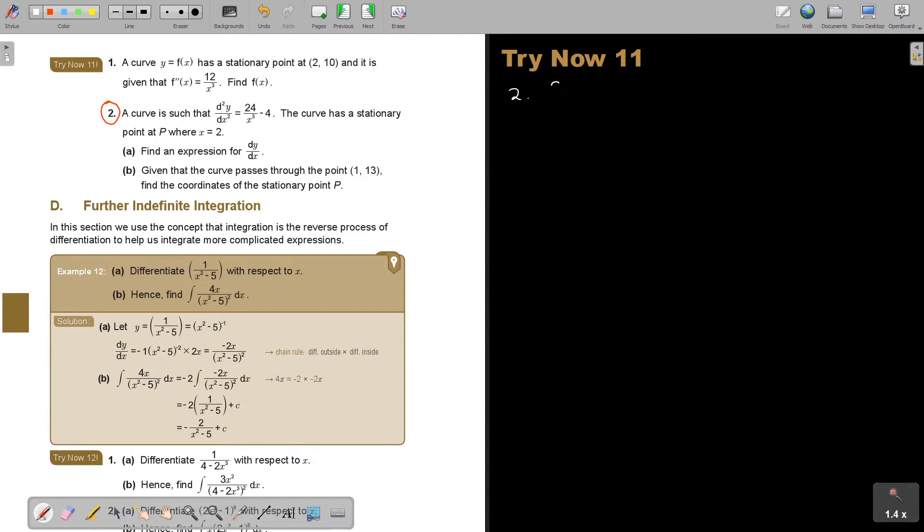Let's start number 2. A curve is such, and again it's the second derivative. Can you see that? That square is showing it to you. Now, the curve has a stationary point at p where x is 2. Luckily, I just need that x value.